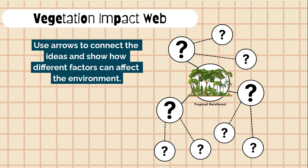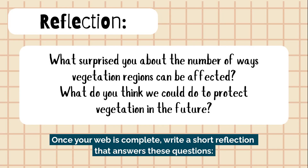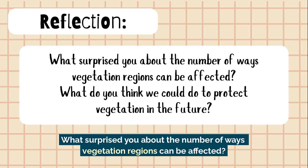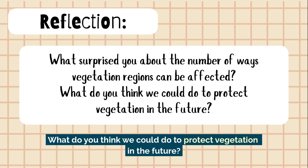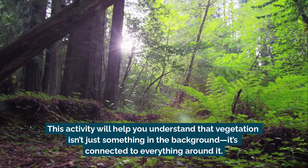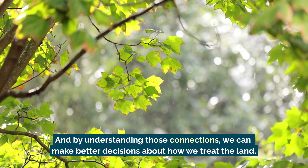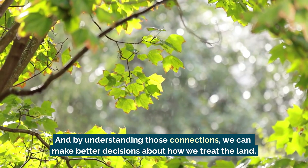Use arrows to connect the ideas and show how different factors can affect the environment. Make sure your impact web is colorful, clear, and easy to follow. Once your web is complete, write a short reflection that answers these questions: What surprised you about the number of ways vegetation regions can be affected? What do you think we could do to protect vegetation in the future? This activity will help you understand that vegetation is connected to everything around it, and by understanding these connections, we can make better decisions about how we treat the land. Good luck, and get ready to untangle the web of change.